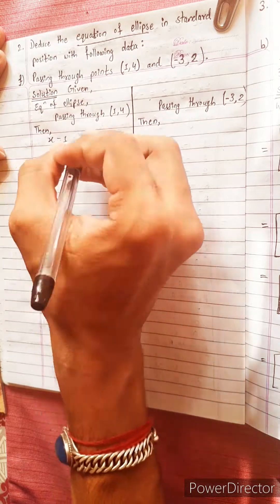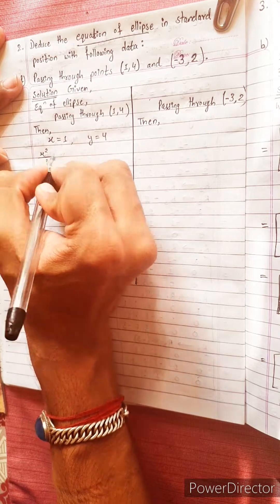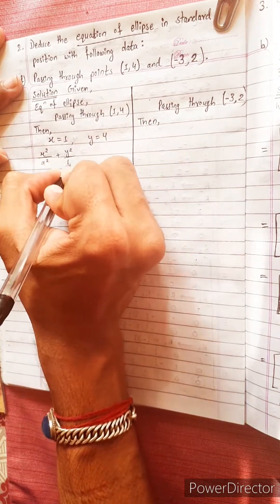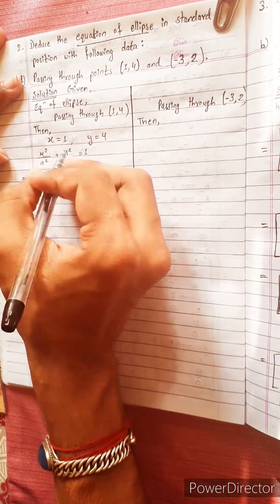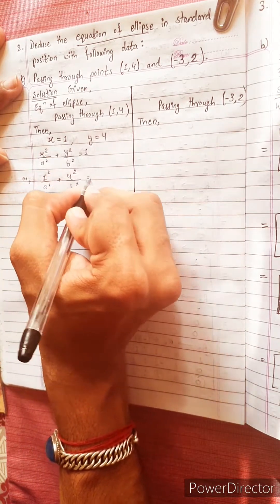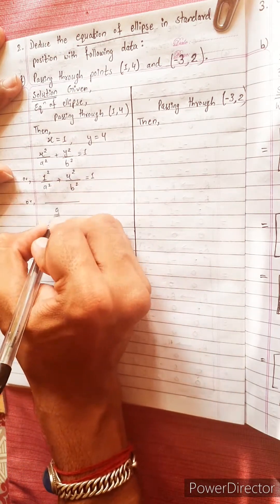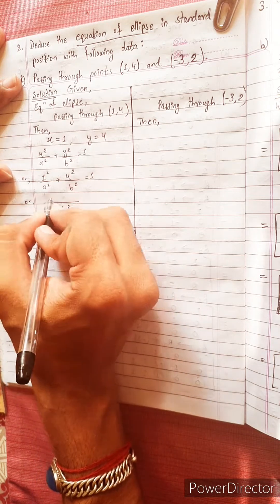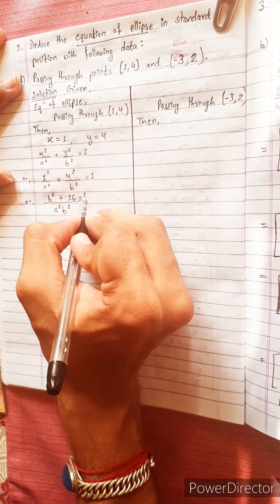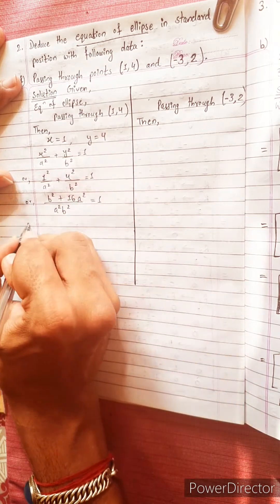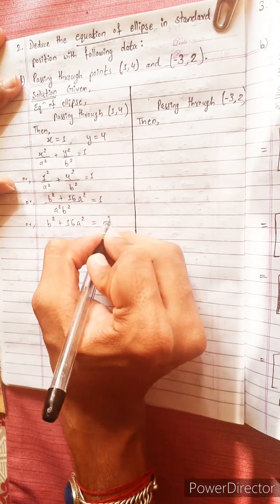For the first point, x equals 1 and y equals 4. Our standard equation of ellipse is: x² / a² + y² / b² = 1. Substituting: 1² / a² + 4² / b² = 1. Taking LCM a²b², we get b² + 16a² = a²b². This is equation one.